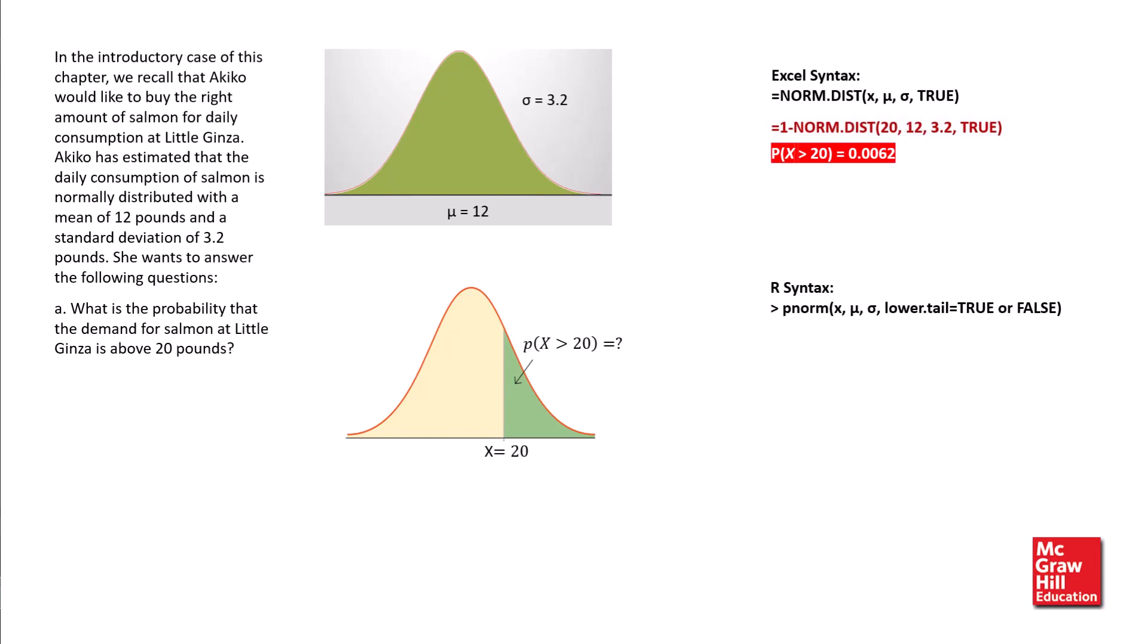In R, we use the pnorm function with the value of x, the population mean, the population standard deviation, and lower.tail equal to true or false. Since we want to obtain the probability beyond 20,